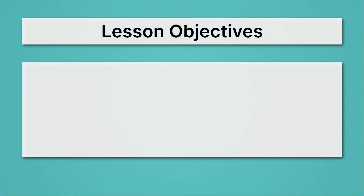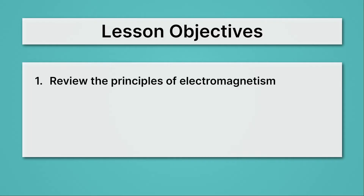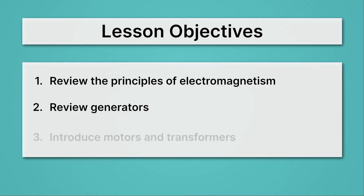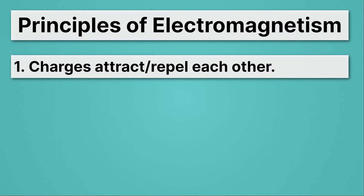Let's begin by reviewing our lesson objectives. First, we'll review the principles of electromagnetism, which we introduced at the beginning of this unit. Then we'll review generators, which make electric currents from motion — they generate electricity. Then we'll introduce motors and transformers, which also use the principles of electromagnetism. First up, let's review the principles of electromagnetism.